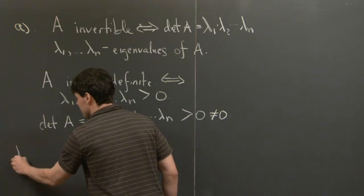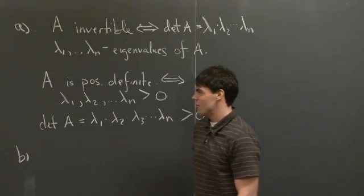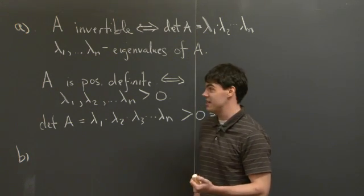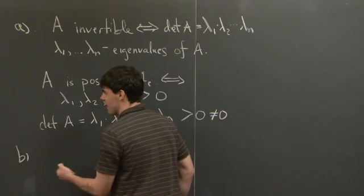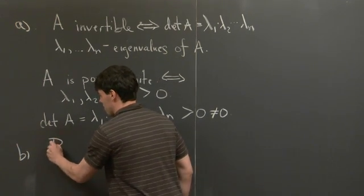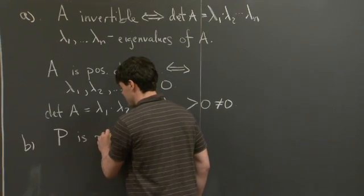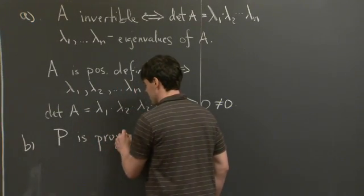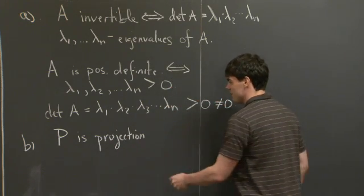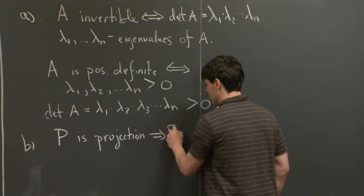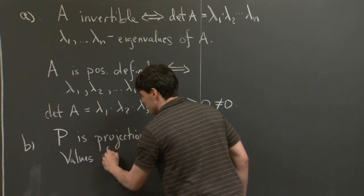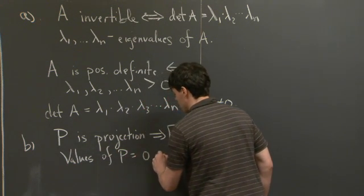For Part B, we're asked to show that the only positive definite projection matrix is the identity matrix. How do we tackle this problem? We're going to look at the eigenvalues. If P is a projection, what does this say about the eigenvalues of P? It says that the eigenvalues of P are either 0 or 1.